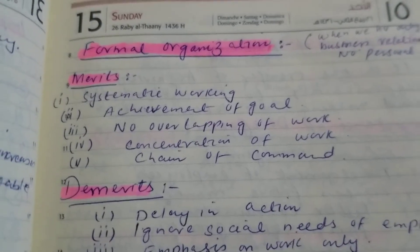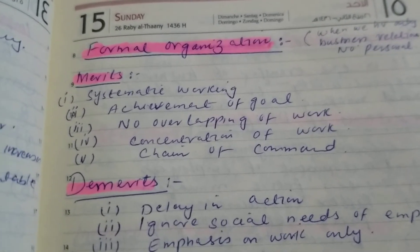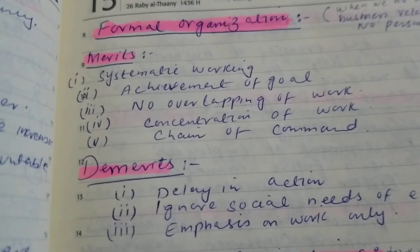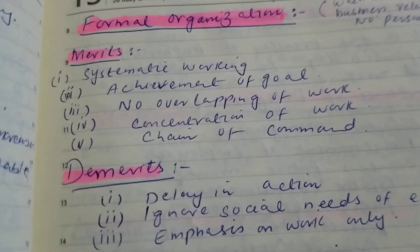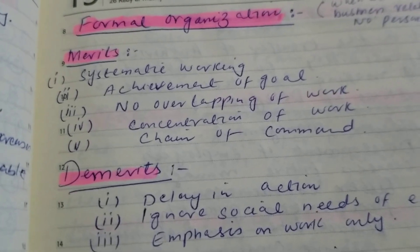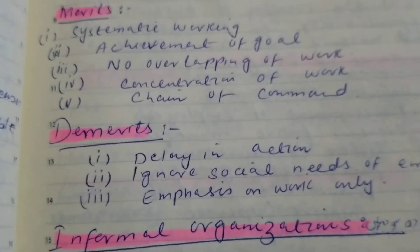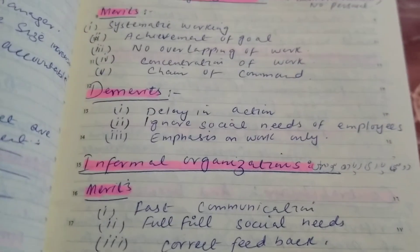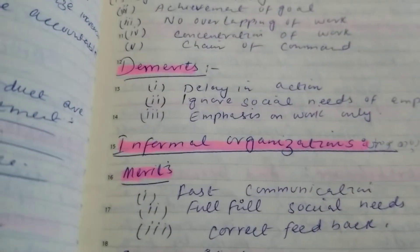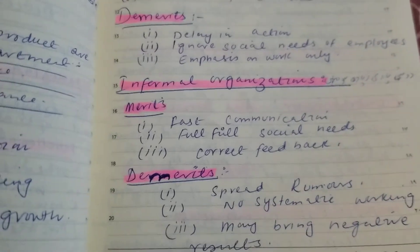In a formal organization there are only business relations with no personal ones. Its merits include systematic working, achievement of goals, no overlapping of work, and a clear chain of command. Demerits include delay in action, ignoring the social needs of employees, and emphasis on work only.